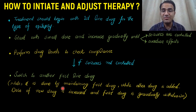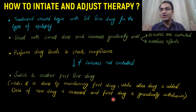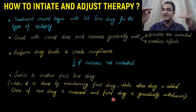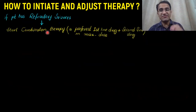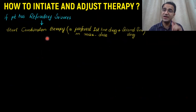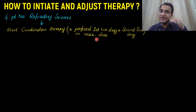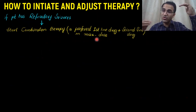Keep the patient on the first drug, add the second drug, slowly increase the dose of the second and decrease the dose of the first, then withdraw the first drug. If the patient has refractory seizures, consider combination therapy: take the preferred first-line drug to maximum doses and add a second-line drug with it.